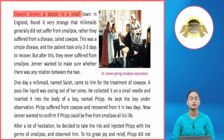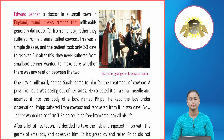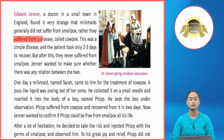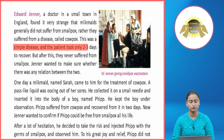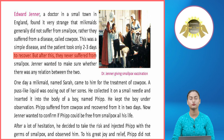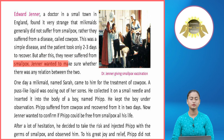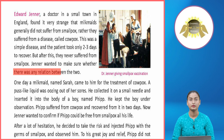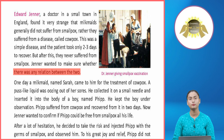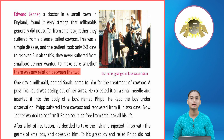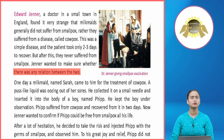Edward Jenner, a doctor in a small town in England, found it very strange that milkmaids generally did not suffer from smallpox. Rather, they suffered from a disease called cowpox — a simple disease from which the patient recovered in only two to three days. But after this, they never suffered from smallpox. Jenner noticed that while smallpox affected everyone, milkmaids got cowpox instead, which healed in two to three days.